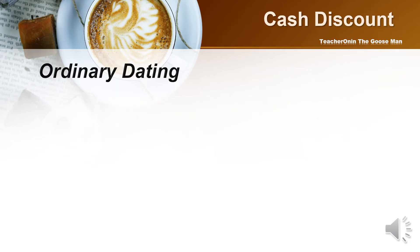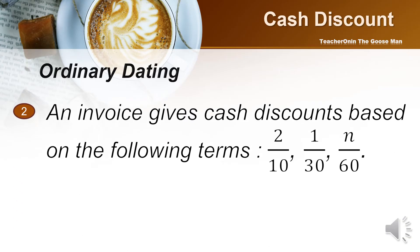Let's have another example for ordinary dating. An invoice gives cash discounts based on the following terms: 2/10, 1/30, and N/60. These terms indicate that a 2% cash discount is allowed if the bill is paid within 10 days from the invoice date, a 1% discount if paid after 10 days and before 30 days, and the net amount of the invoice is due within 60 days from the invoice date.